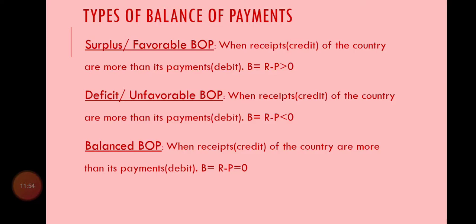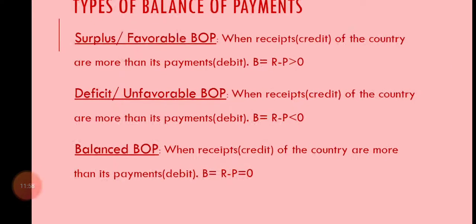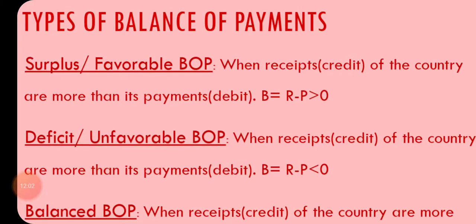Types of Balance of Payment: Balance of Payment has three types. The first is known as surplus or favorable Balance of Payment — when receipts of the country are more than its payments. That means your exports are greater and you have exported a larger quantity of commodities to the world, resulting in more receipts, while comparatively you have imported fewer things and therefore made fewer payments. Your income exceeds your payments, so Balance of Payment is greater than zero — it is surplus. This is favorable because more capital is flowing into your country while outflow is less.